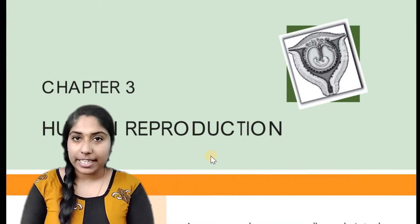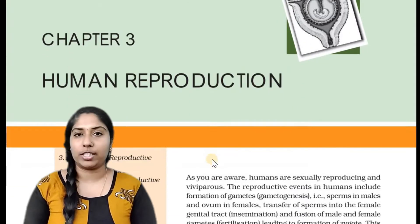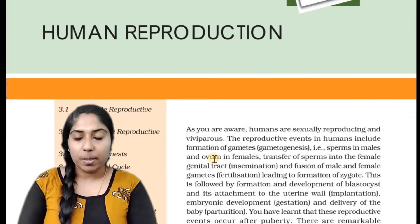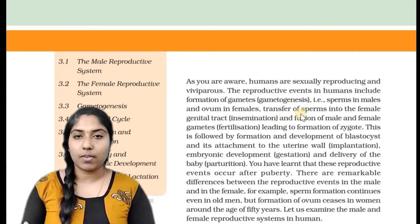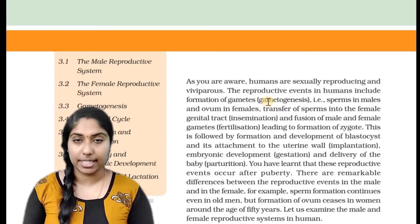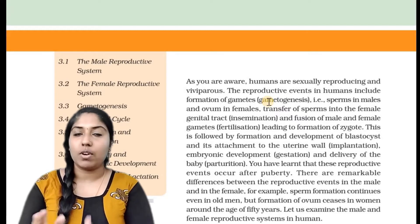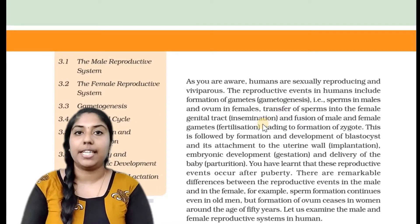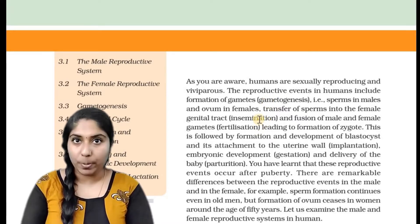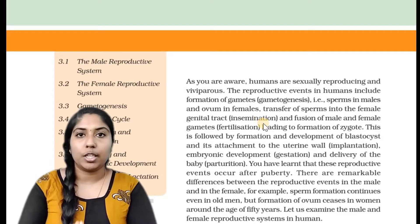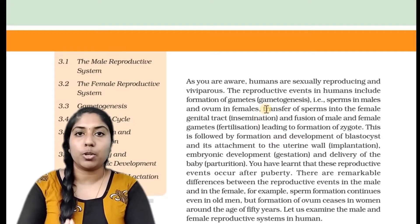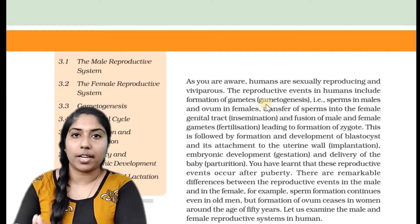So what is human reproduction? Human reproduction is the ability of human beings to produce young ones similar to themselves. In the textbook, humans are sexually reproducing organisms.